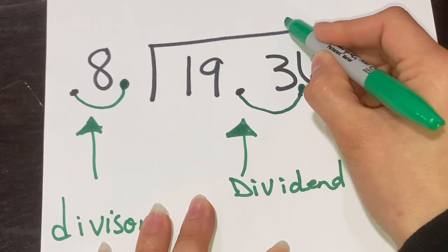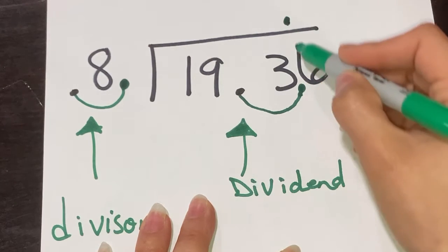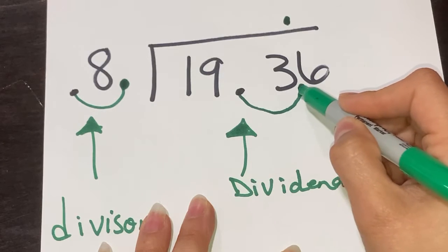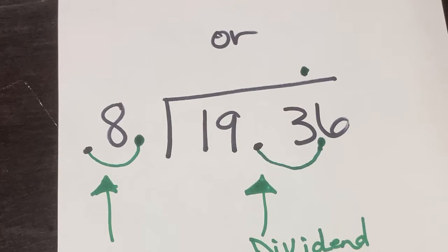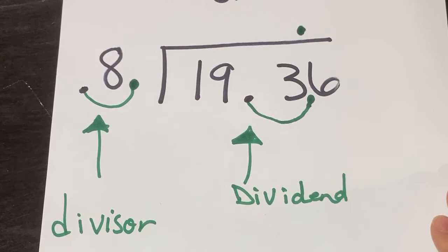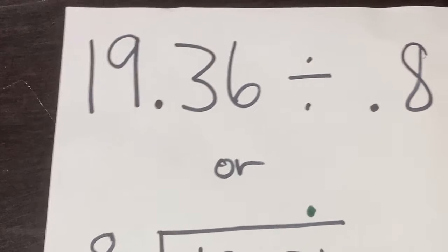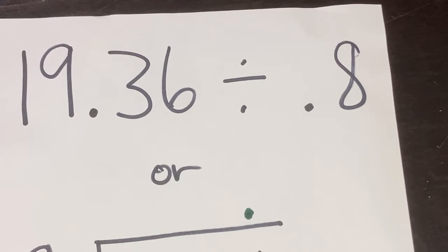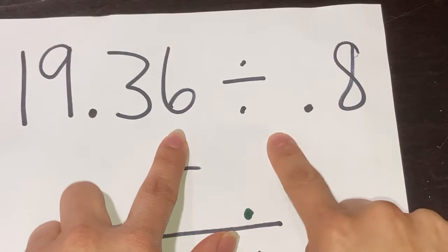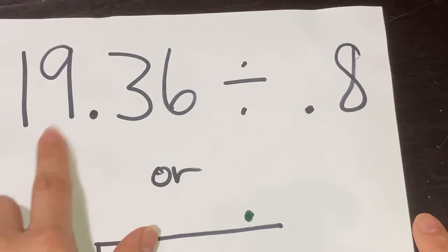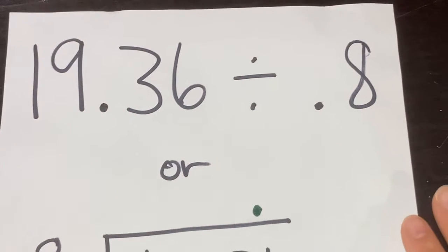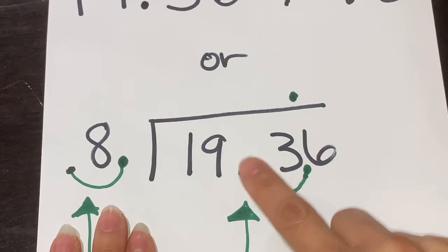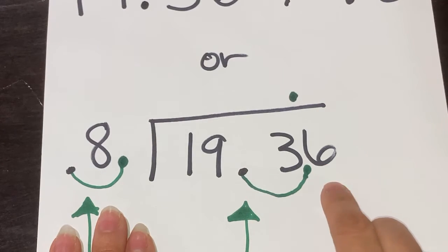Let's put the decimal up where my answer is going to go — the decimal should be right in between the 3 and the 6 and it goes right on top like that. So now instead of having 19.36 divided by 0.8, I'm going to think of this as 193.6 divided by 8.